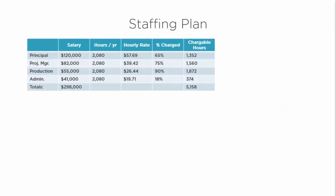This is an example of a staffing plan and what it includes: the salary of a number of different types of employees present in the firm. There is a principal who makes $120,000, a project manager at $82,000 a year, a production staff member or junior architect at $55,000 a year, and admin or support staff at $41,000 a year. The overall staffing salary in this case is $298,000 a year.